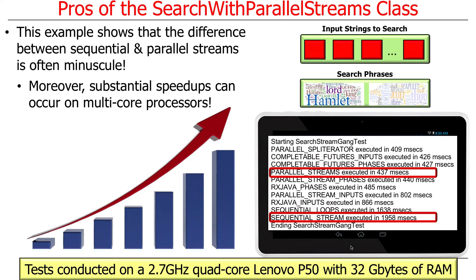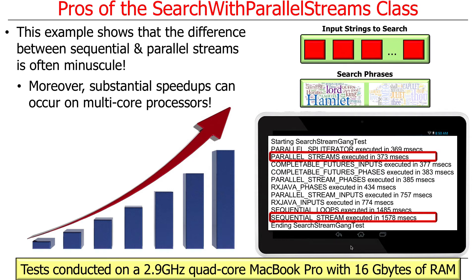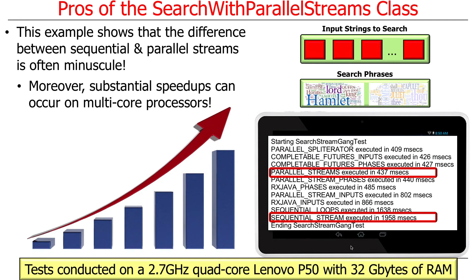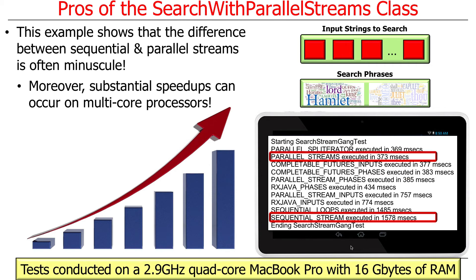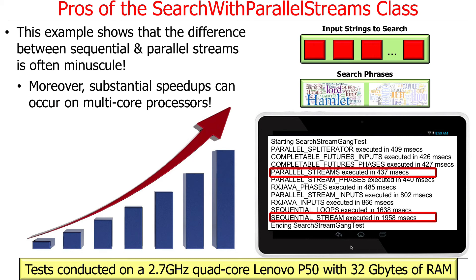When I ran this on my quad-core Lenovo P50 with 32 gigs of RAM, that was the speedup I saw. When I ran the same code on my quad-core MacBook, which has a slightly faster processor — 2.9 gigahertz versus 2.7 gigahertz — but only half the RAM, some interesting things occurred. Everything runs faster, which shows the MacBook is a faster computer. Also notice that parallel streams runs faster than everything except the parallel spliterator version on the MacBook, whereas on the Lenovo, parallel streams was faster than sequential streams but a little slower than the versions that use completable futures.